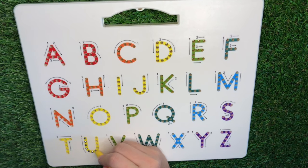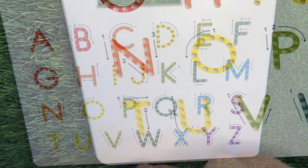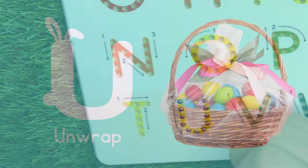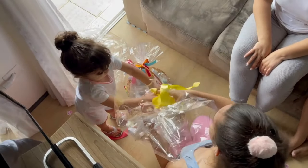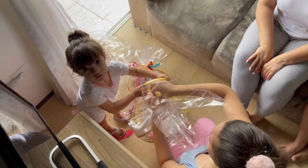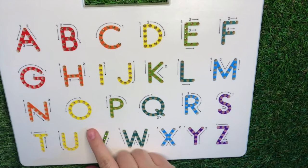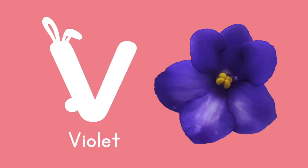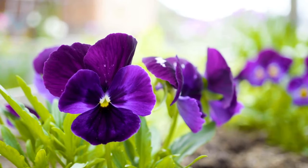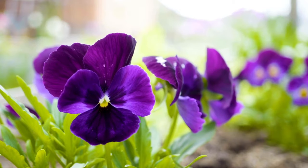U is for unwrap! V is for this beautiful color — do you know the name? It's violet. V is for violet.